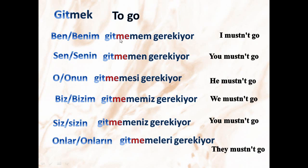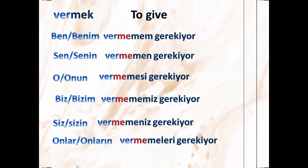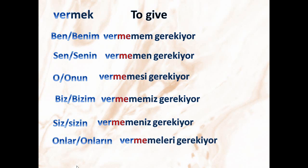It's not necessary to use the pronoun part — you can use just the verb. Next verb: 'vermek', which means 'to give'. Ben/benim vermemem gerekiyor — I mustn't give. By the way, if you're going to put an object, it comes just before the verb. For example, 'I mustn't give water': ben su vermemem gerekiyor.